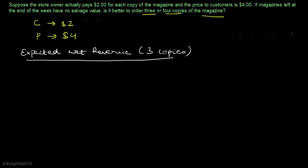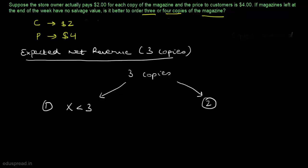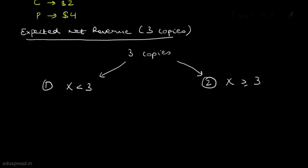If the store owner orders 3 copies, there could be two cases. The first case is that the demand for the magazine is less than 3 — in this case the store owner will not be able to sell all the copies. The second case is that the demand is greater than or equal to 3 — in this case he will be able to sell all the copies.